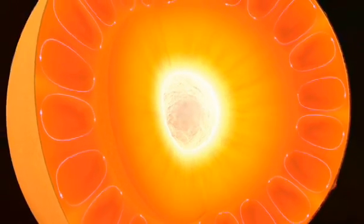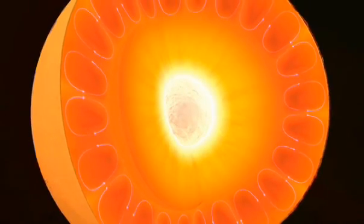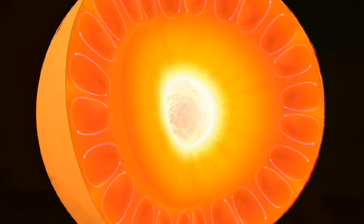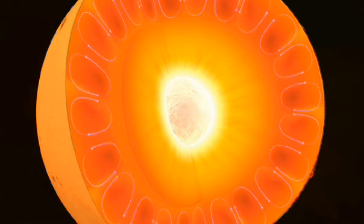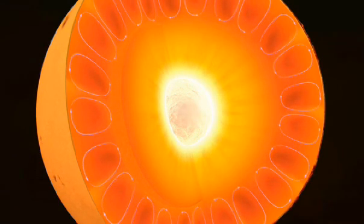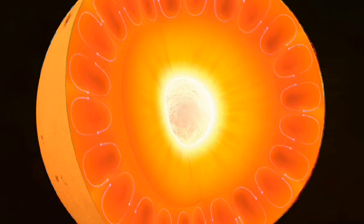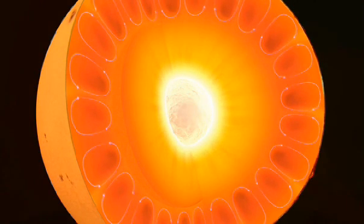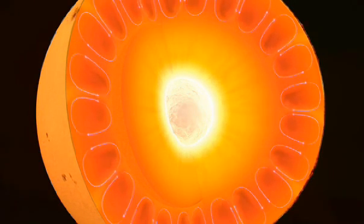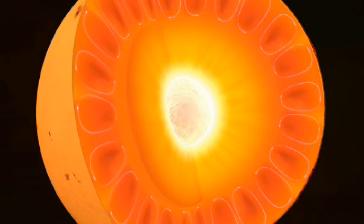The convection zone extends from the radiative zone to the surface of the Sun. In this zone, the temperature drops to two million Kelvin, which is too cool to allow energy transport by radiation. Instead, the energy creates huge convection cells of plasma which bubble to the surface.